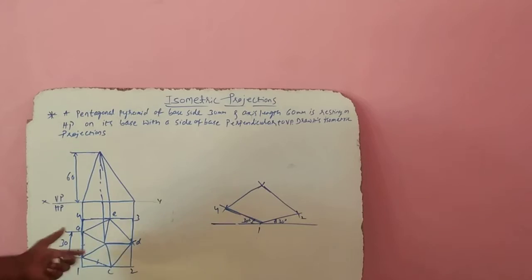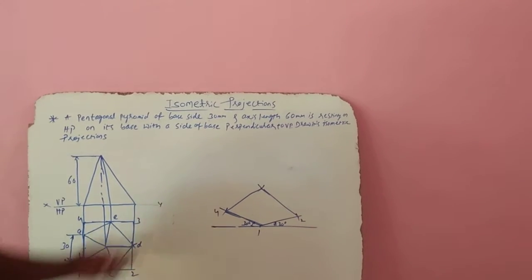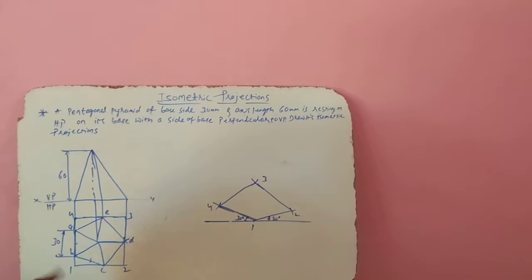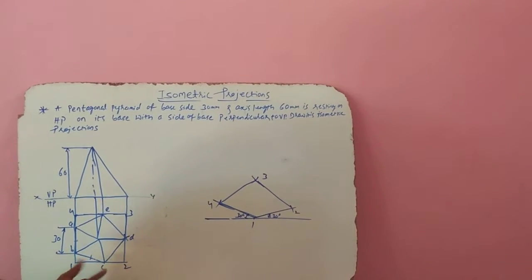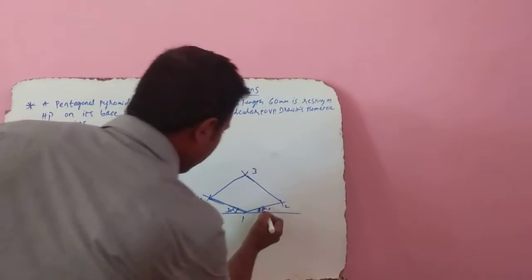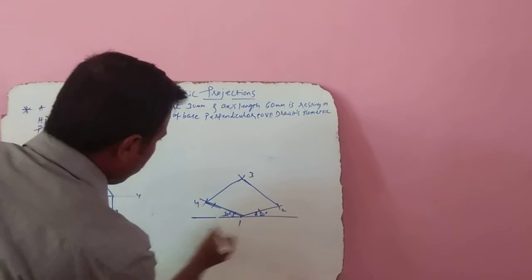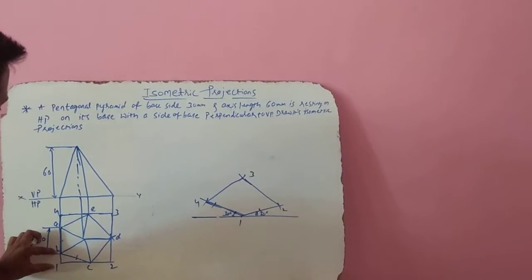Now we need to transfer all the points A, B, C, D onto this line. This will be the 3 now. On 1 to 2, you are having a C, measure 1 to C, convert that to isometric length and mark it here. Similarly, 4 to A you have to measure, convert that to isometric. Similarly, 1 to B, convert that to isometric.